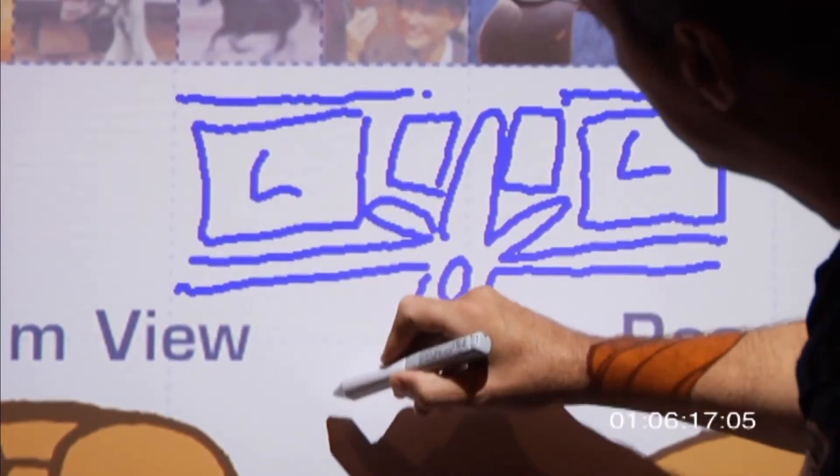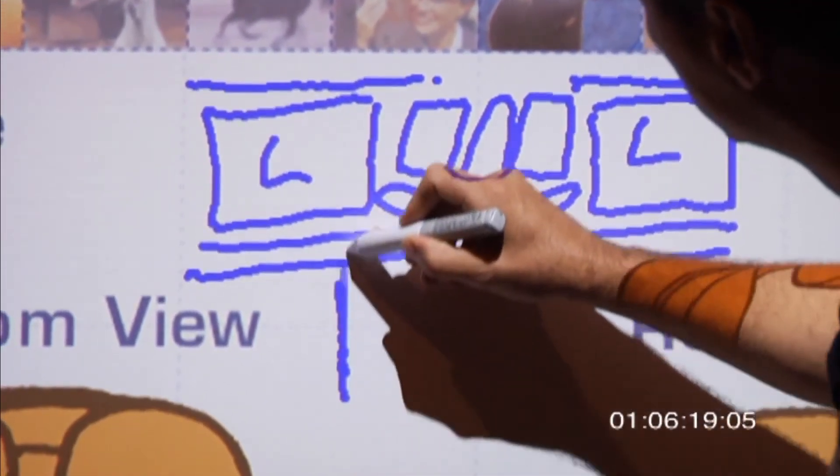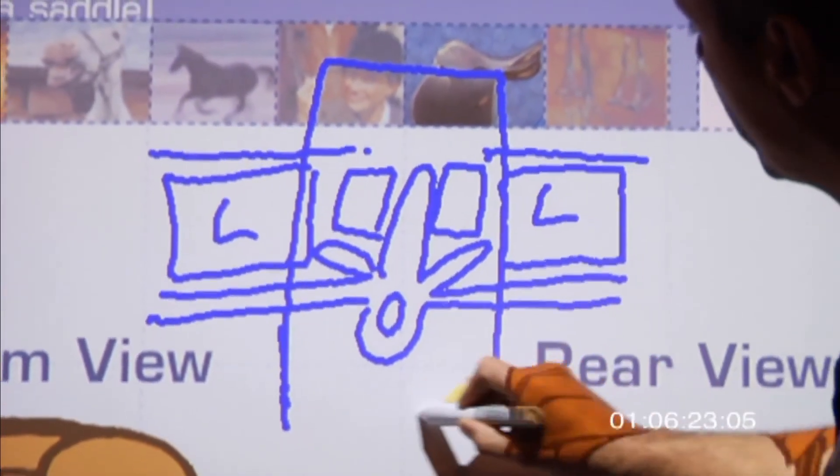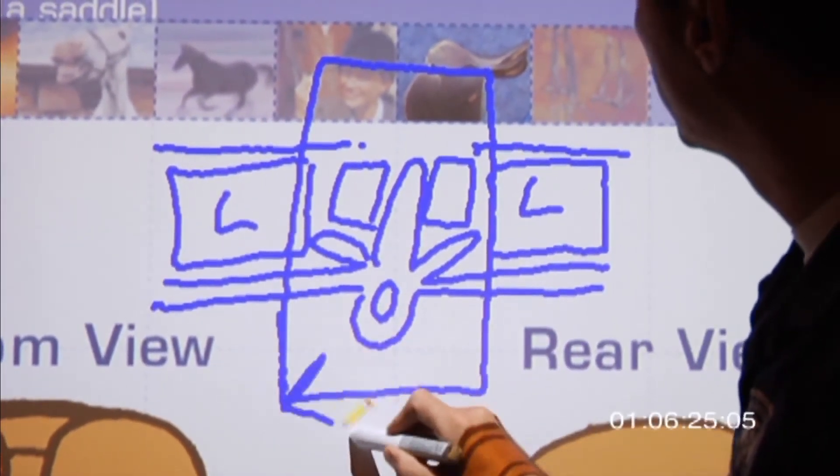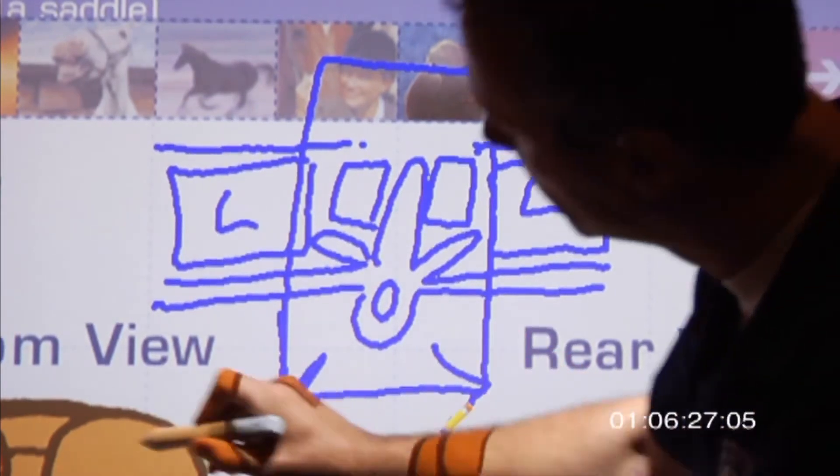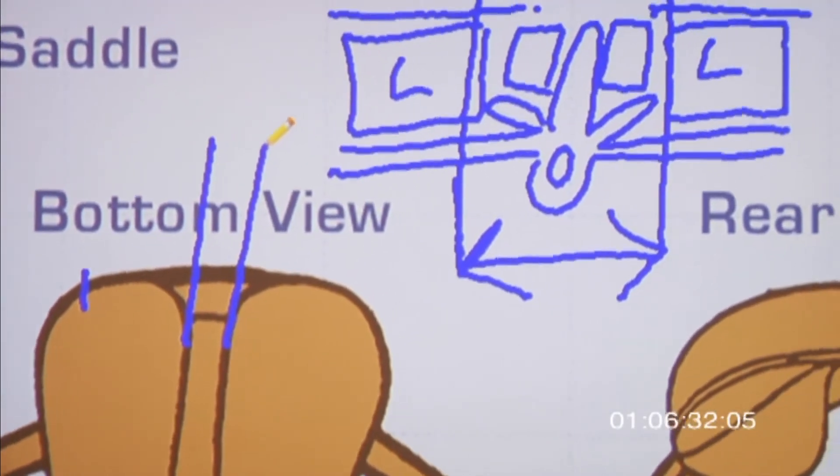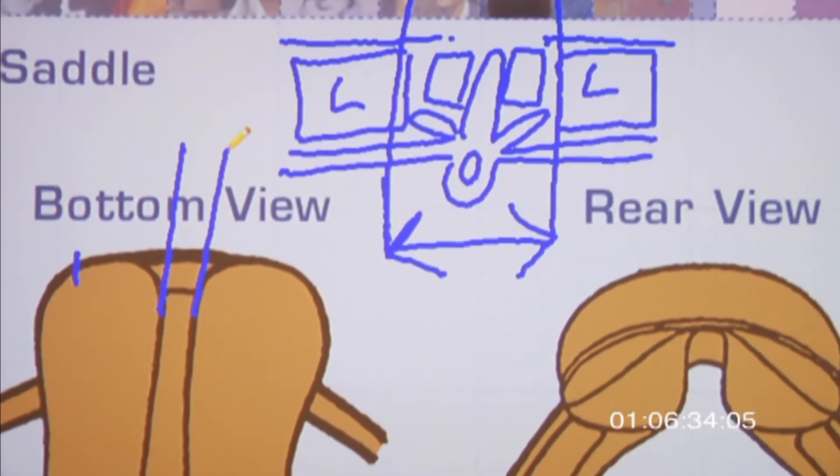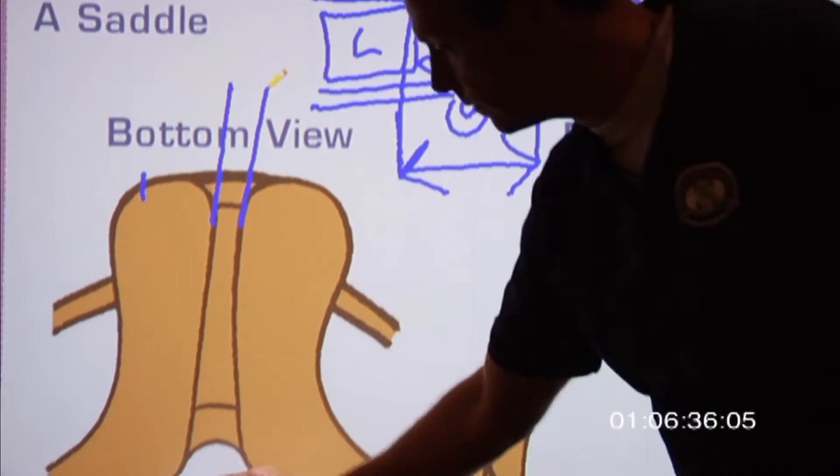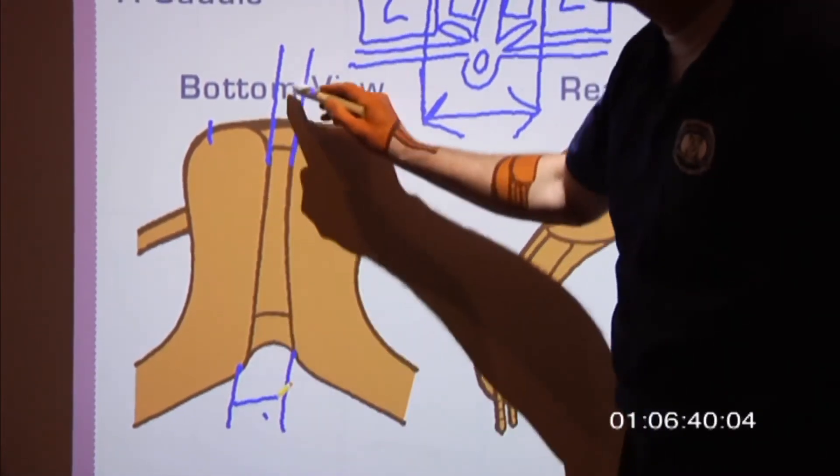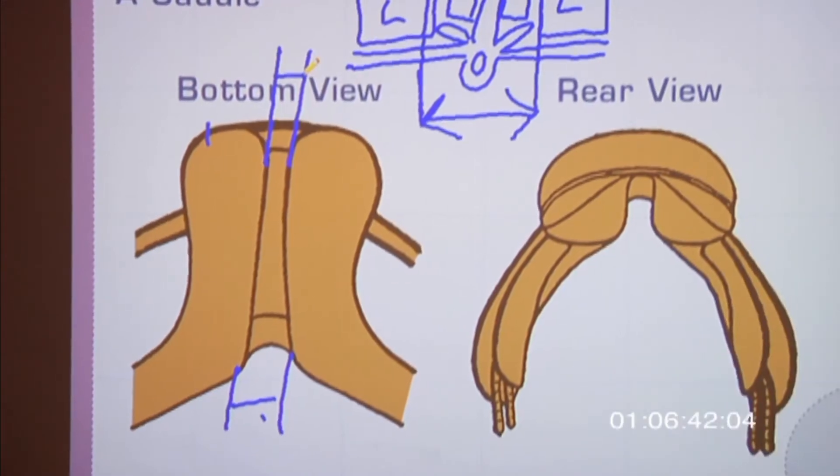So this space I really want to protect is right here. That's the space that has to match. Now very often we see saddles where the saddle is nice and wide in the front but narrow in the back. Why is that?